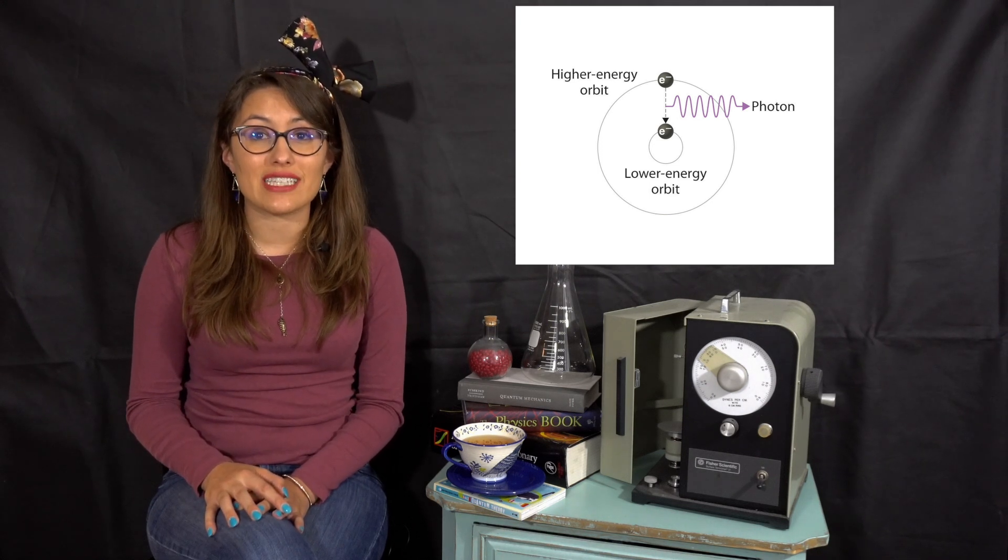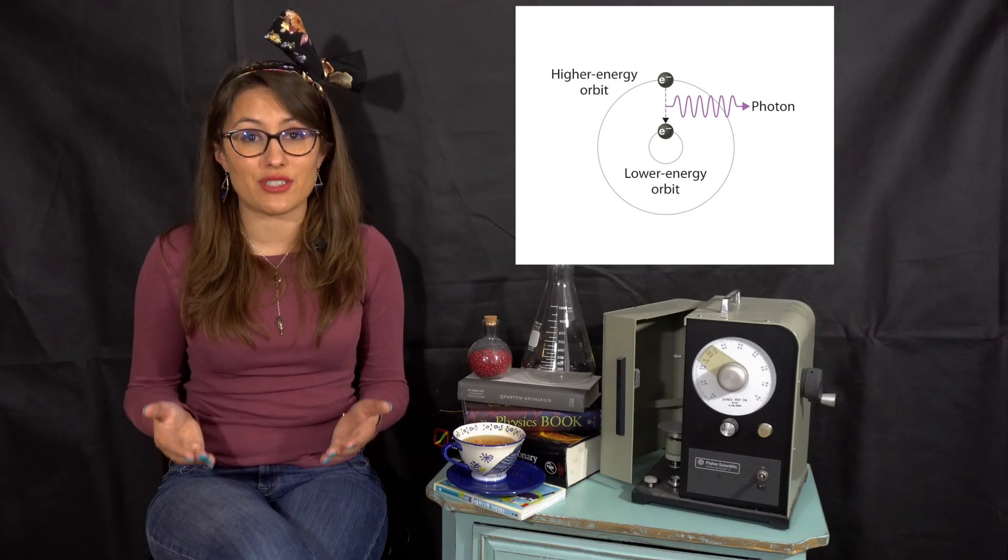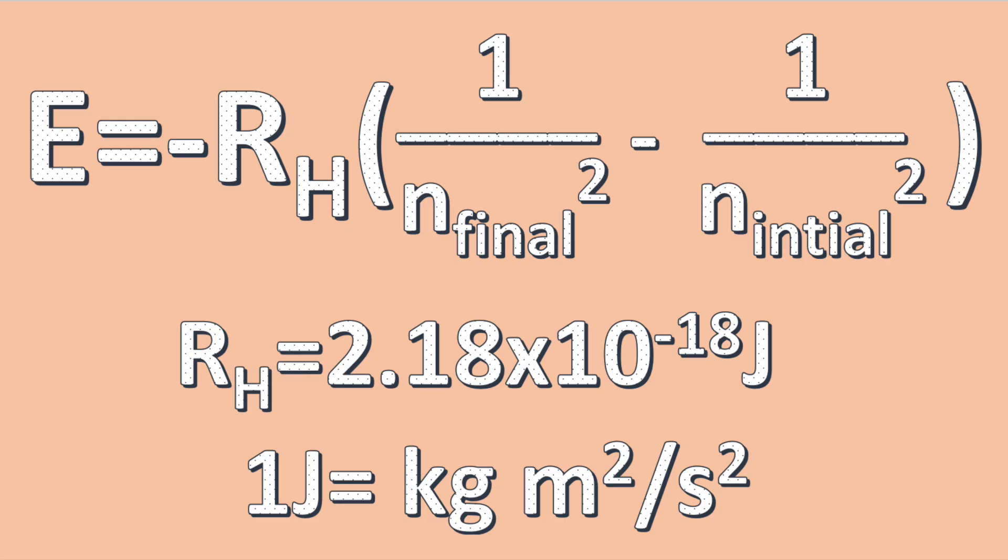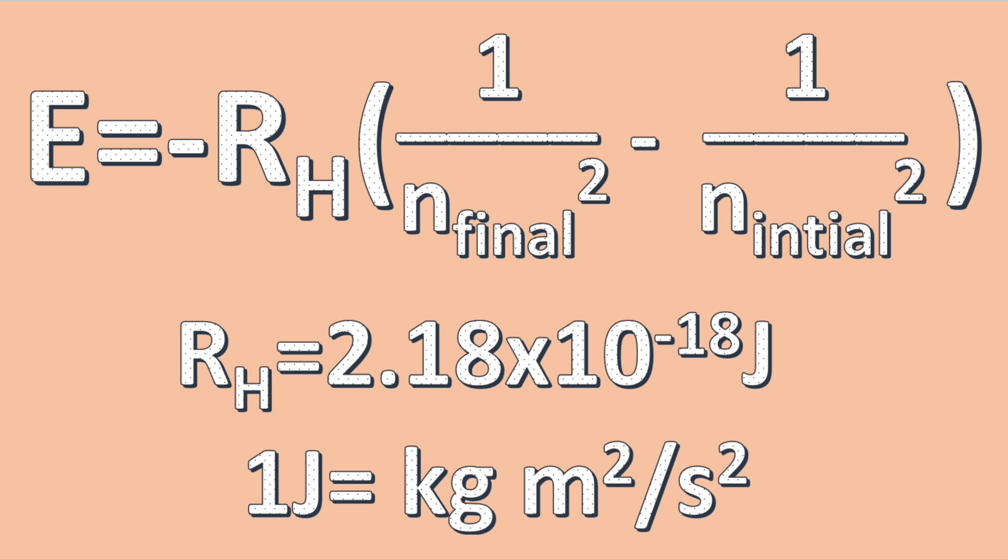These transitions explain the spectral lines in the emission spectrum of an atom. The following equation can be used to determine the energy that is emitted from an atom, where N is the energy level at which the electron is at, and RH is the Rydberg constant for hydrogen, which is equal to 2.18 times 10 to the negative 18th joules.